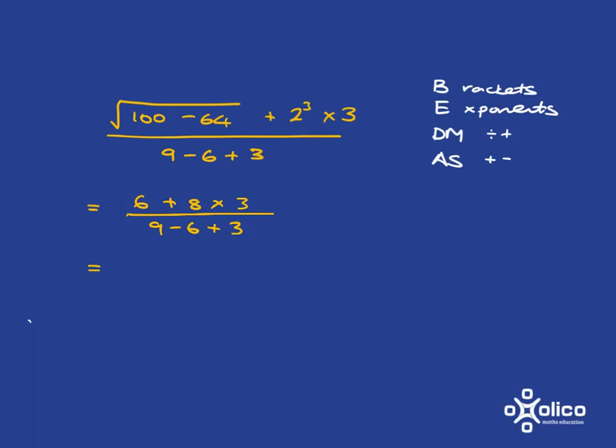BEDMAS tells me that after that, I must deal with my division and multiplication. So I am going to deal with my multiplication here first. So I'm going to have 6 plus 24. And then at the bottom of my fraction, I've got 9 minus 6 plus 3.